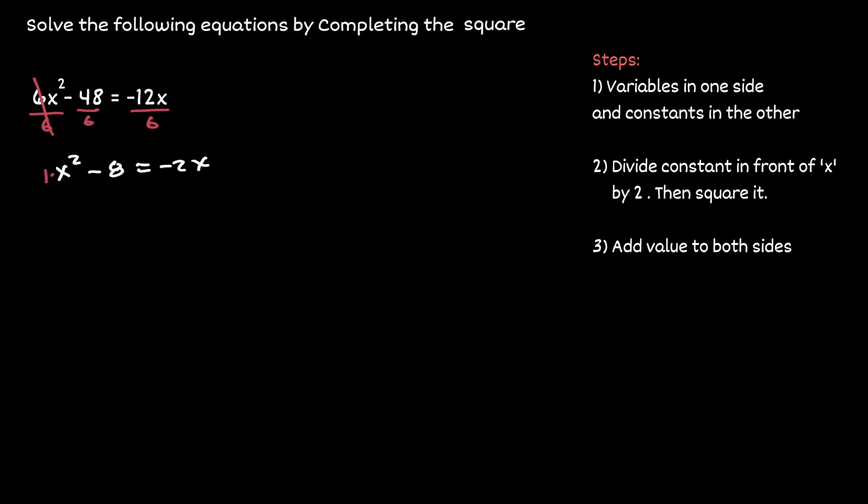Now notice that the value in front of x squared is 1. Now we can start the process of completing the square. In our first step, we want to put all the variables on one side and all the constants on the other.